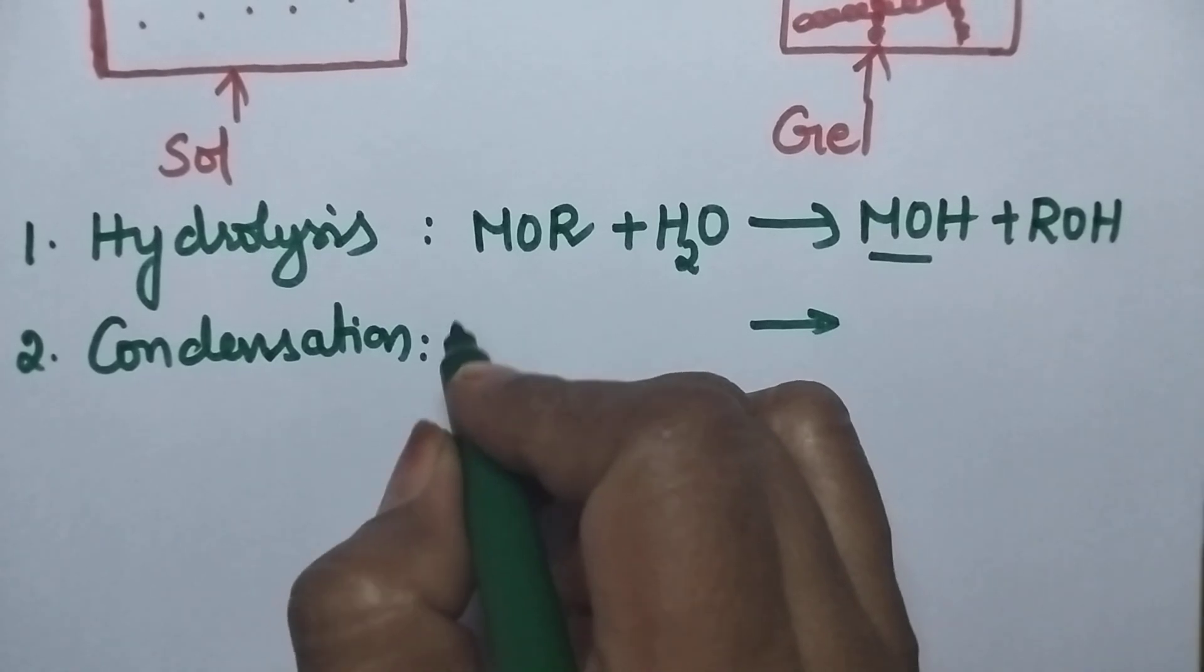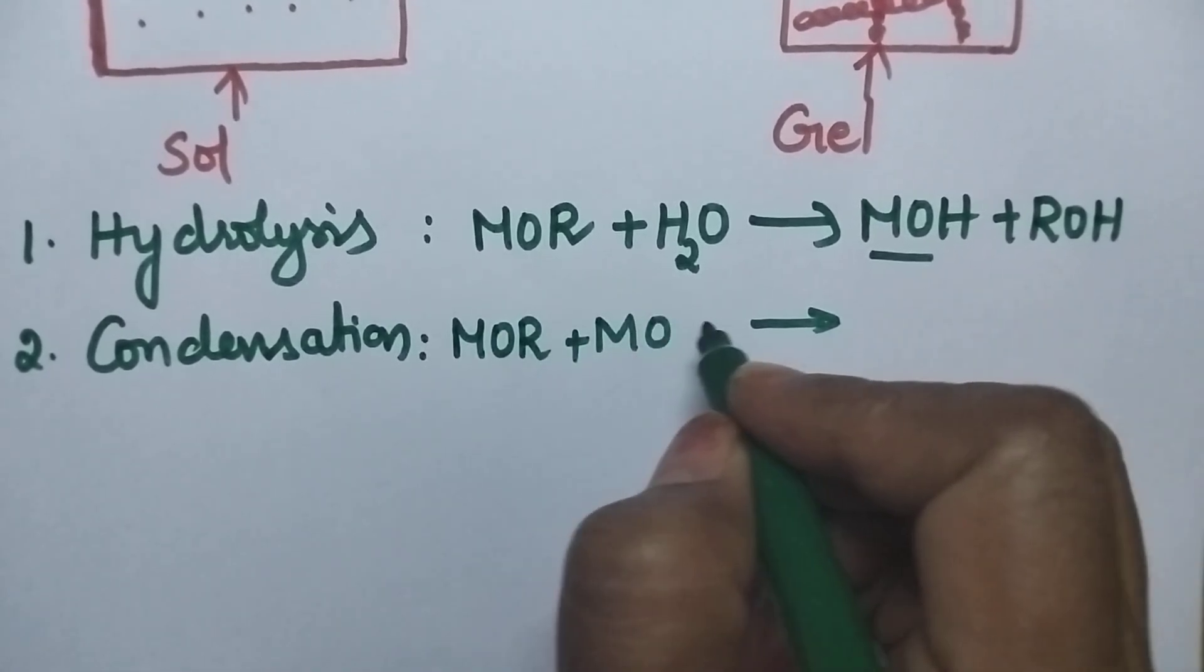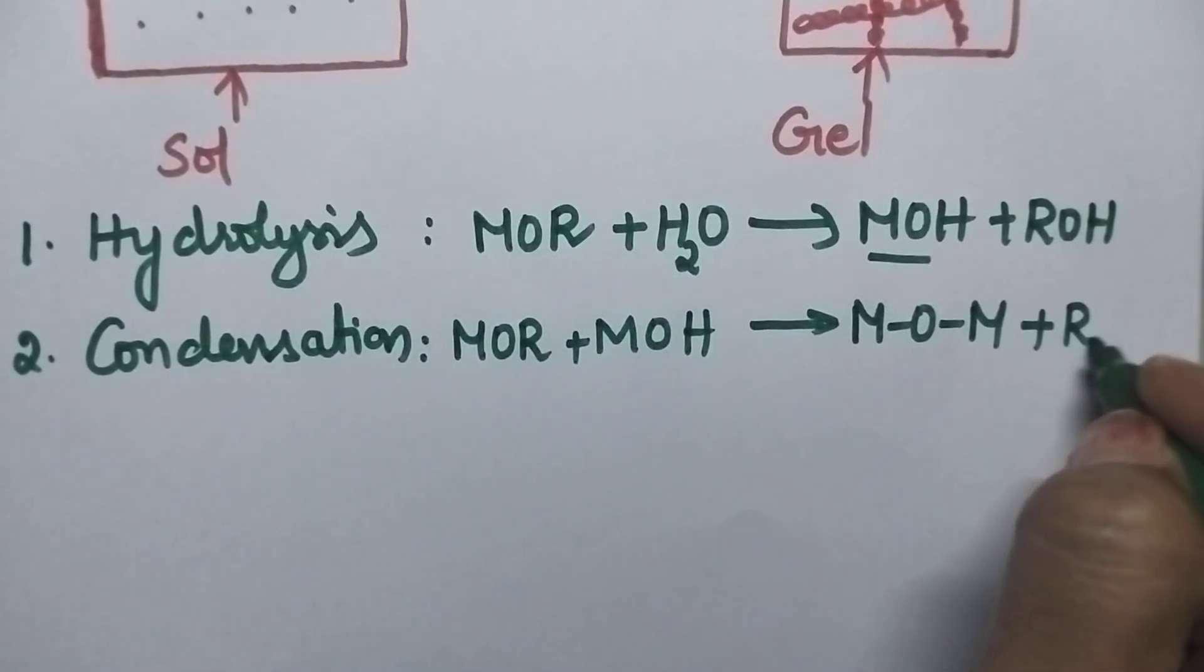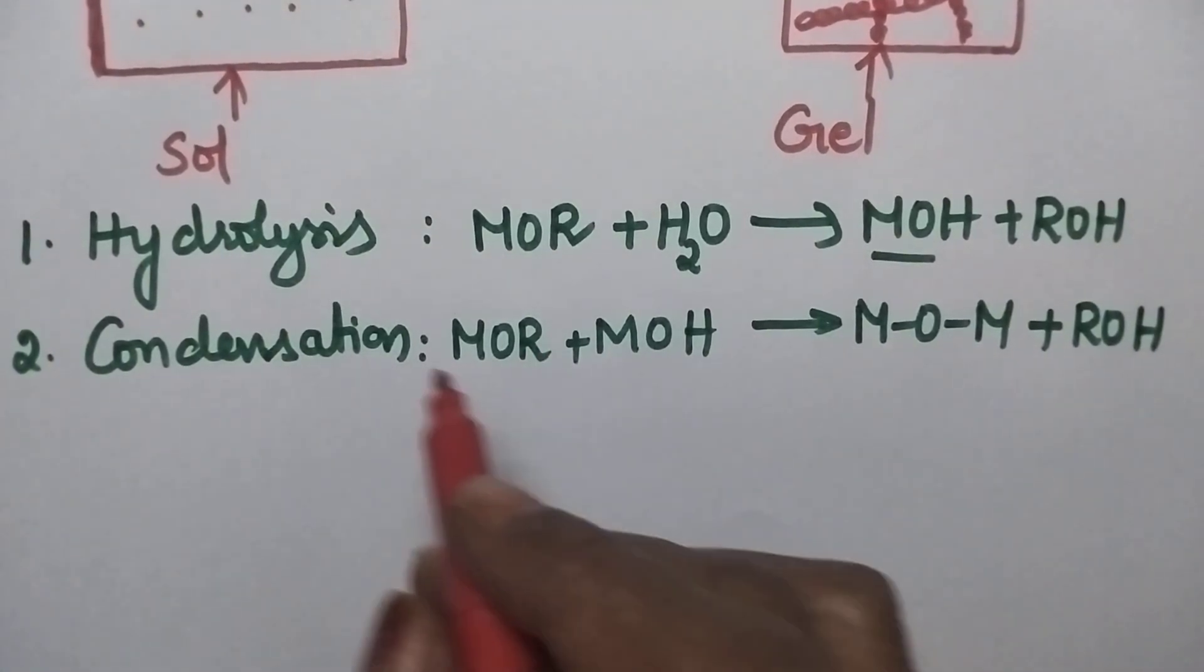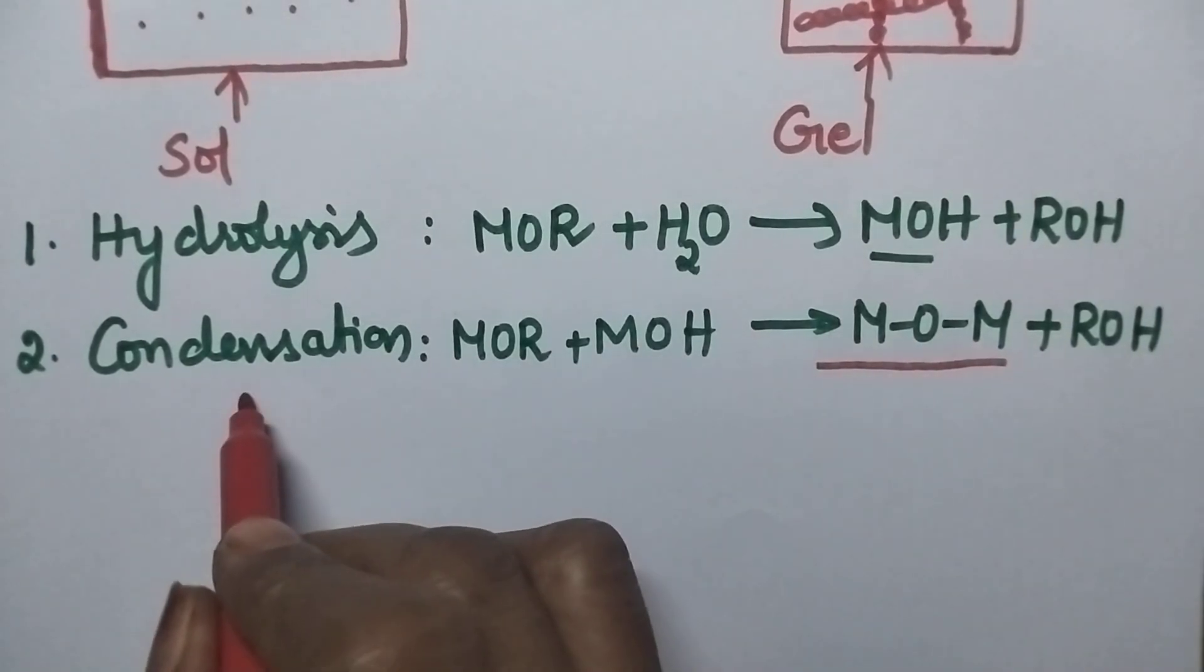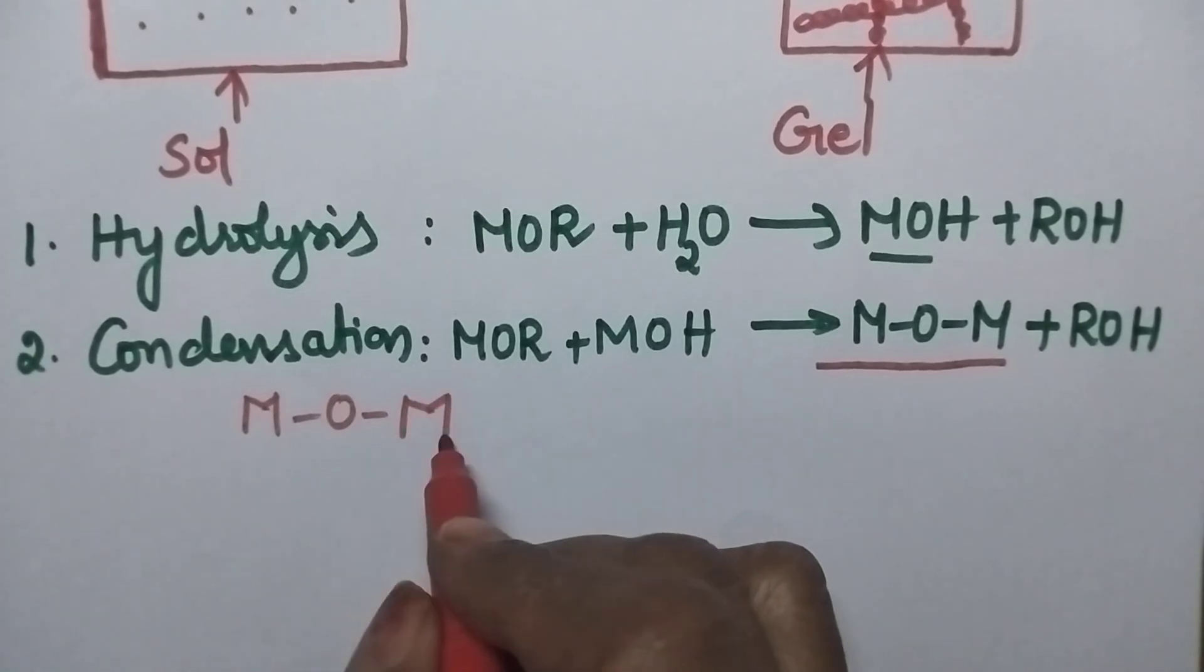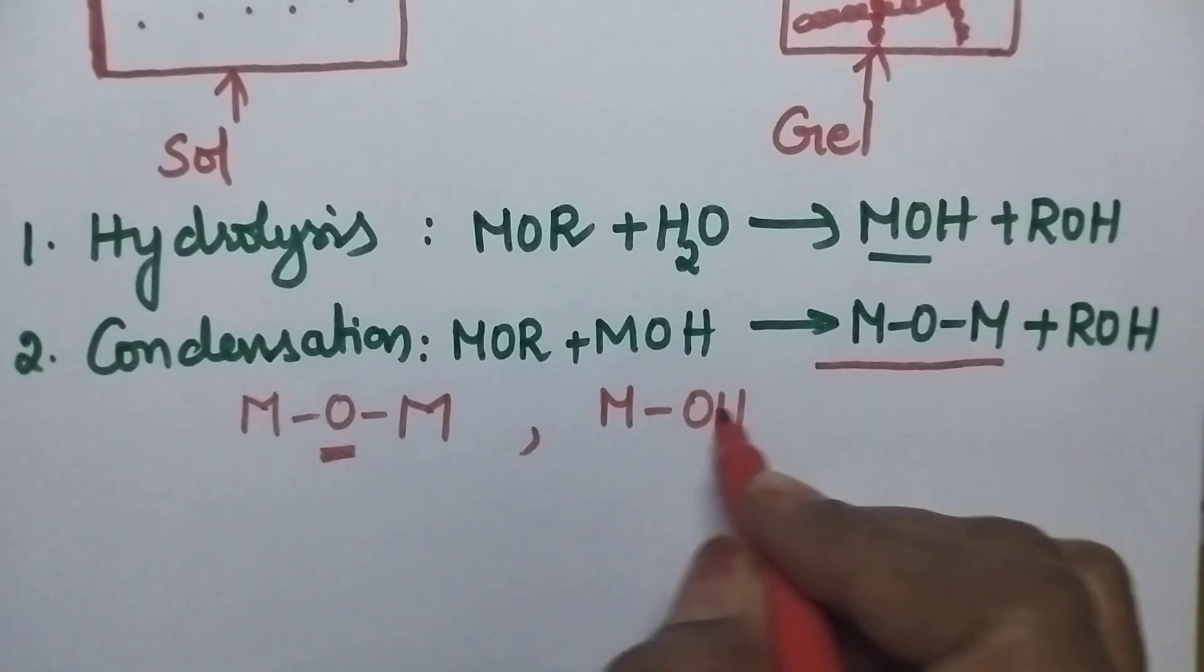So in the second step MOR condenses with MOH and then it results in the formation of oxo linkages between the metals. So especially through this Sol Gel method it is possible to prepare metal oxide nanomaterials. That means the two metal atoms will be joined together through oxo linkages or sometimes they may be joined together by the hydroxo linkages.